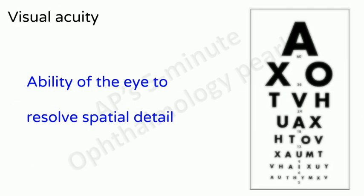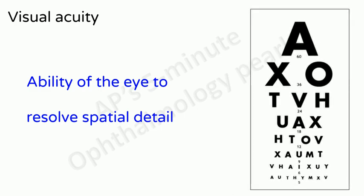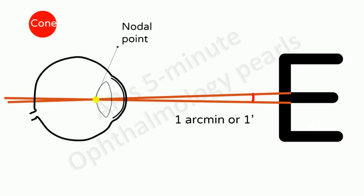Visual acuity is defined as the ability of the visual system to resolve spatial detail and can be determined by the smallest retinal image whose form can be appreciated. The smallest object which produces such an image and which can therefore be resolved by the eye, subtends the same visual angle at the nodal point of the eye as a cone photoreceptor, i.e. one arc minute or minute of arc.